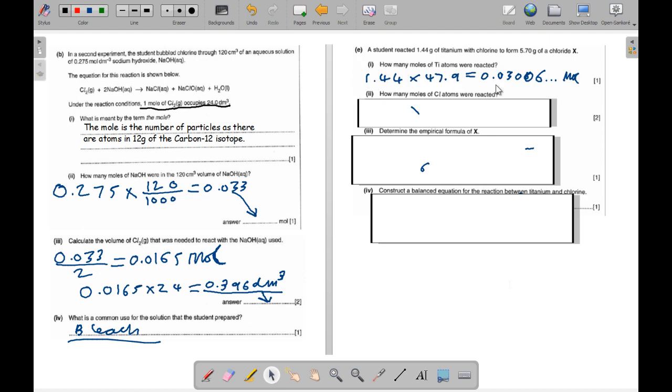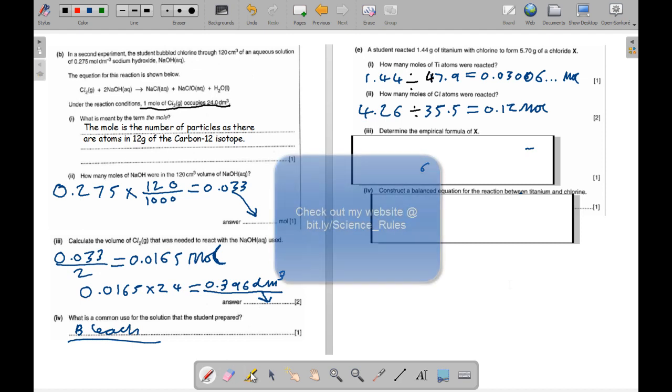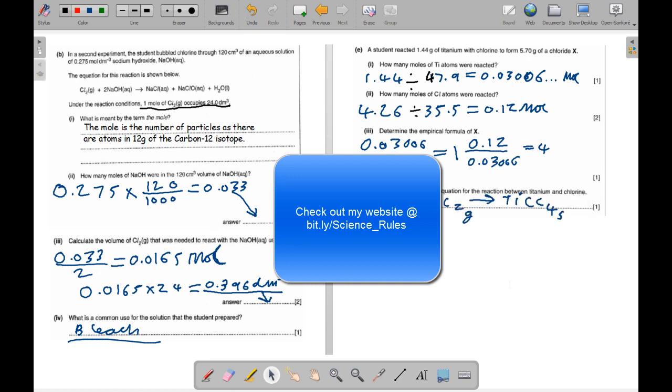For this question, moles of titanium reacted: 1.44 divided by 47.9 is 0.0306 moles. For chlorine, 5.7 minus 1.44 divided by 35.5 is 0.12 moles. We look at the two values. For the empirical formula, 0.0306 over 0.0306 is 1. 0.12 over 0.0306 is 4. So we get TiCl4. That is the answer. And the equation is Ti solid plus 2Cl2 gas gives TiCl4 solid.